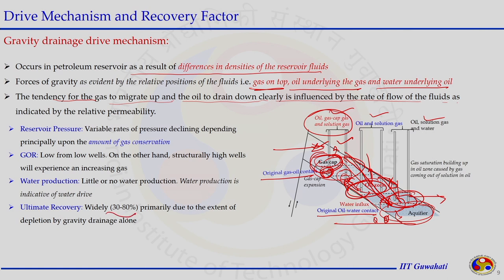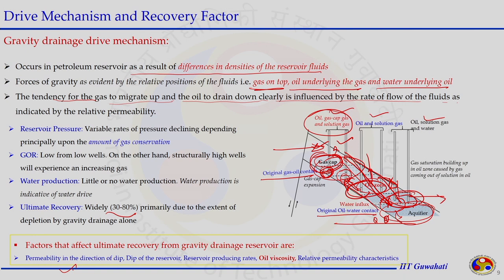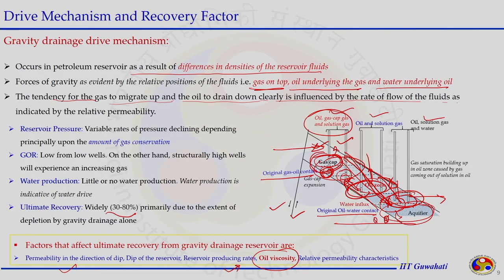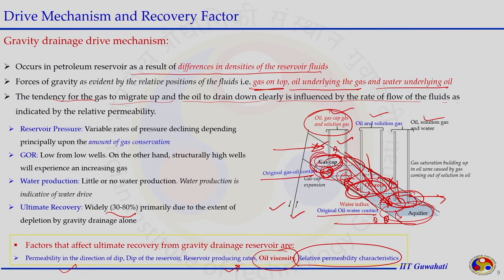Ultimate recovery by gravity drainage is 30 to 80 percent, depending on several factors: permeability in the direction of dip, the dip angle of the reservoir, reservoir production rate, oil viscosity — less viscous oil moves more easily — and relative permeability characteristics, as there is competition between oil and gas moving upward or downward depending on formation. These factors all influence contribution to gravity drive mechanism for oil production.